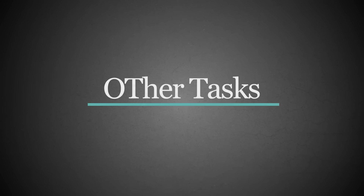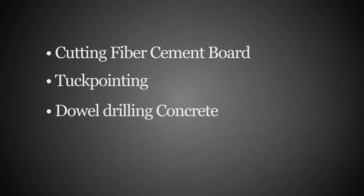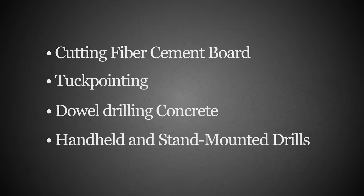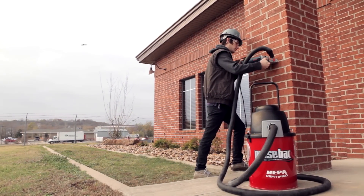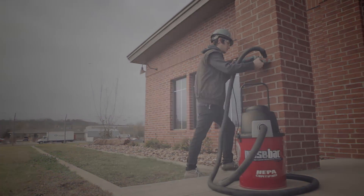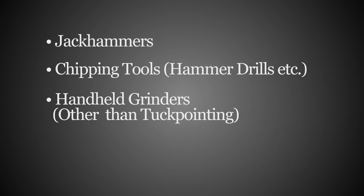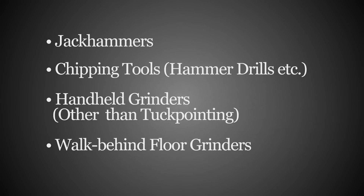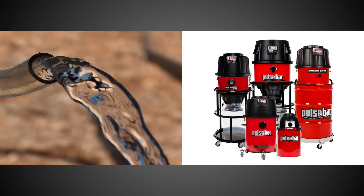Other tasks have different requirements and options. Things like cutting fiber cement board, tuck pointing, dowel drilling concrete, and using handheld and stand-mounted drills must use a commercially available dust shroud and a dust collector. For jackhammers and chipping tools like hammer drills, handheld grinders, walk-behind milling machines, and floor grinders have the option of using a water delivery system or a dust collector for less mess.